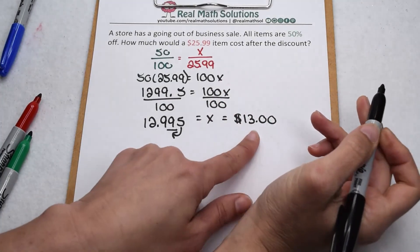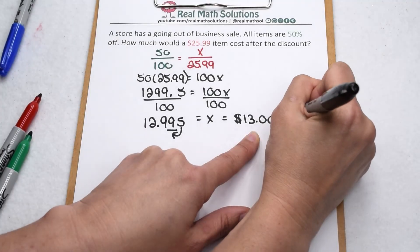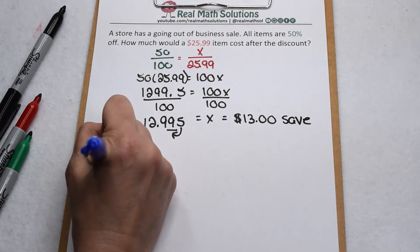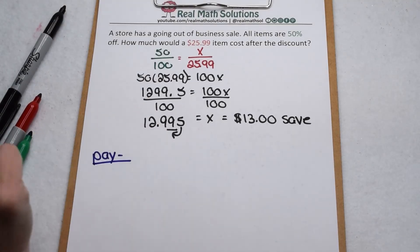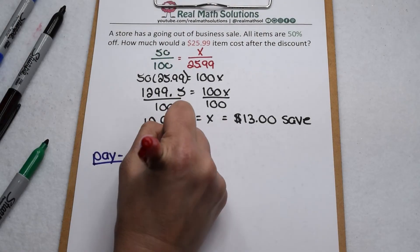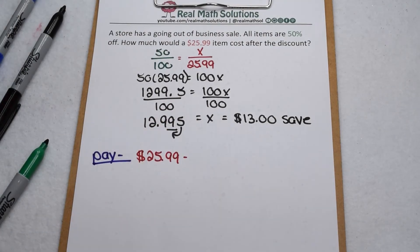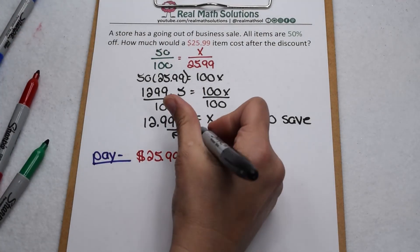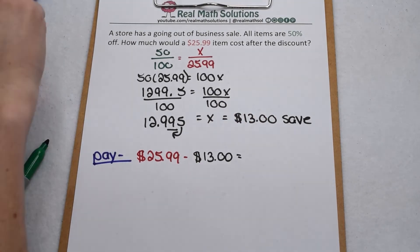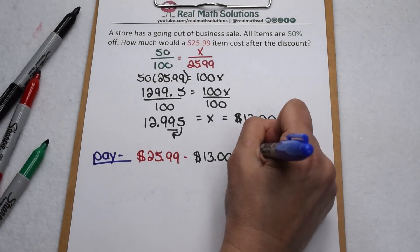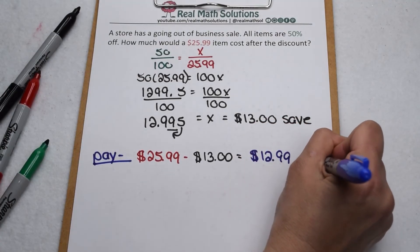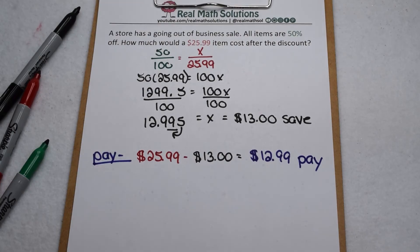Five is going to bump the 99 up to the next whole dollar so that means we're going to have $13.00. Now this $13.00 is our discount. That's what we save, not what we spend. So now we have to figure out how much we're actually going to pay for that item. Well, originally that item cost $25.99, but it was 50% off, which means we're going to take $13.00 off the cost of that item. So after we do that, that's going to come out to be $12.99. So $12.99 is what we're actually going to pay for that sale item.